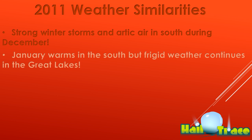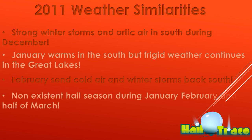January warmed up in the south, but it was frigid to extremely cold across the Great Lakes. In both years it was a similar weather pattern. In February, the cold air came back down to the south and we had more winter storms in the south, which even continued into the first part of March in some areas. A non-existent hail season was common in both years during January, February, and the first half of March.